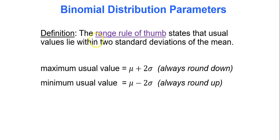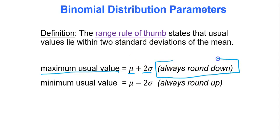The Range Rule of Thumb states that usual values lie within two standard deviations of the mean. The maximum usual value is the mean plus 2 times the standard deviation. It's really important that you always round down, because when you're talking about discrete distributions — which is what a binomial distribution is — you're talking about whole number values. So if the maximum usual value is 13.7, you round it down to 13, which is the most practical maximum.